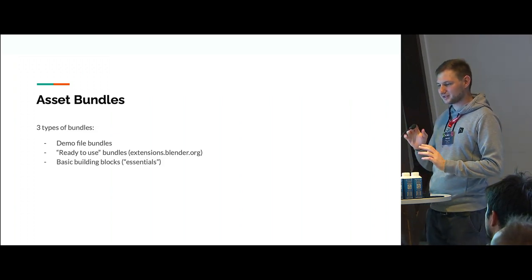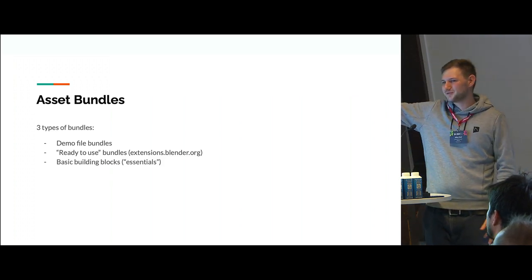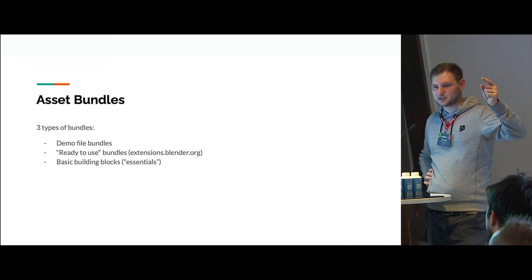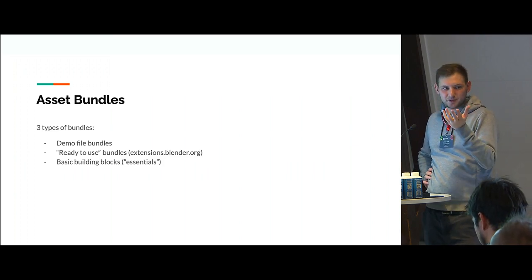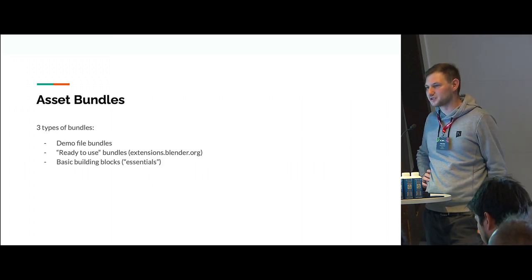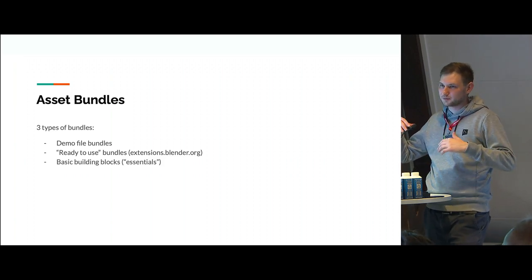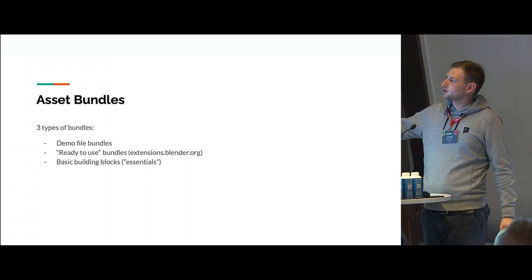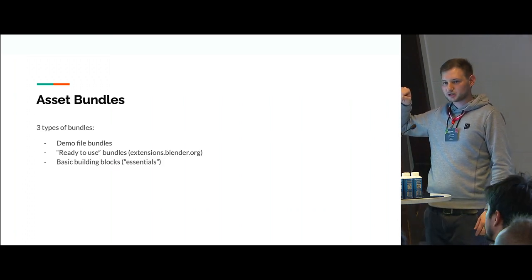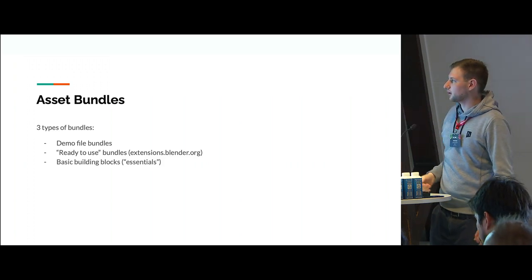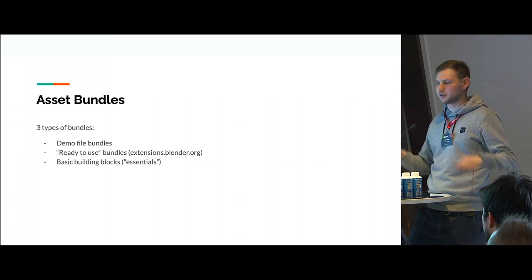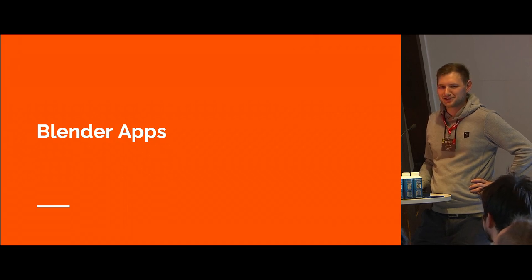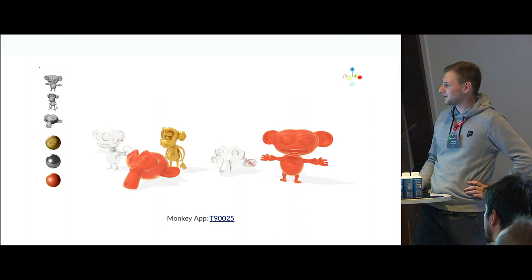We call those 'essentials' — though maybe we should come up with a better term. This can be part of Blender: if you download Blender it's always going to be there, giving you base meshes, utility node groups, maybe 300 brushes. That's really going to make the out-of-the-box experience of Blender much better. Then we want ready-to-use assets on extensions.blender.org — there was a blog post about this last week. There are going to be asset libraries you can browse from within Blender.